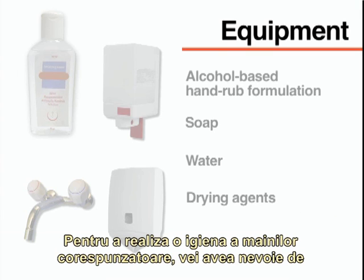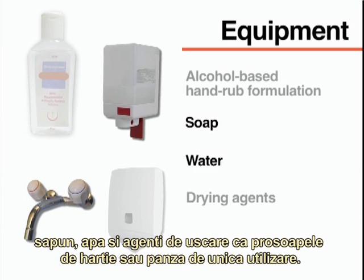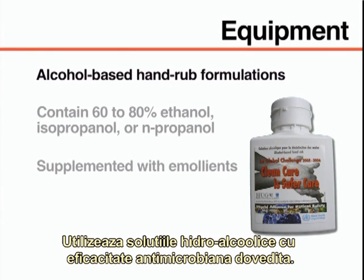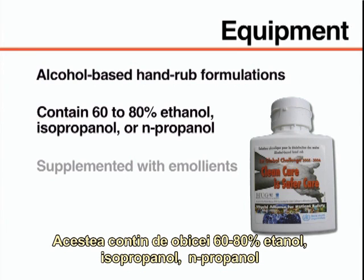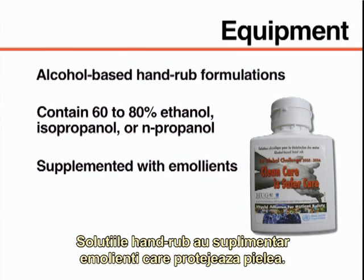To perform adequate hand hygiene, you will need an alcohol-based hand rub formulation, or soap, water, and drying agents such as disposable paper or cloth towels. Use alcohol-based hand rubs with proven antimicrobial efficacy. These usually contain 60–80% ethanol, isopropanol, or n-propanol, or a combination of these products. These hand rubs are supplemented with emollients to protect the skin.